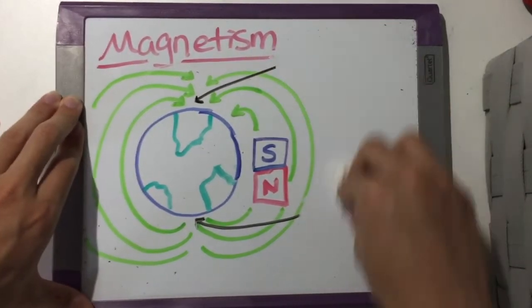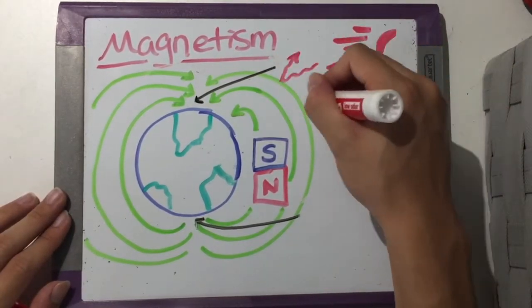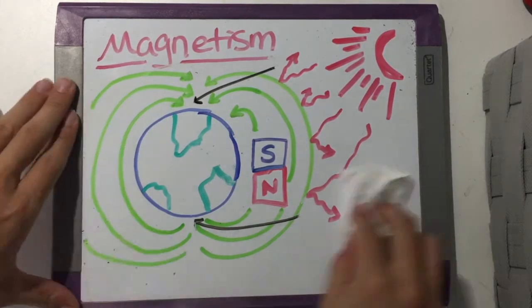Our magnetic field is also preventing us from being frightened by the sun because it repels the solar winds away and filters out most of the harmful ultraviolet rays of the sun.